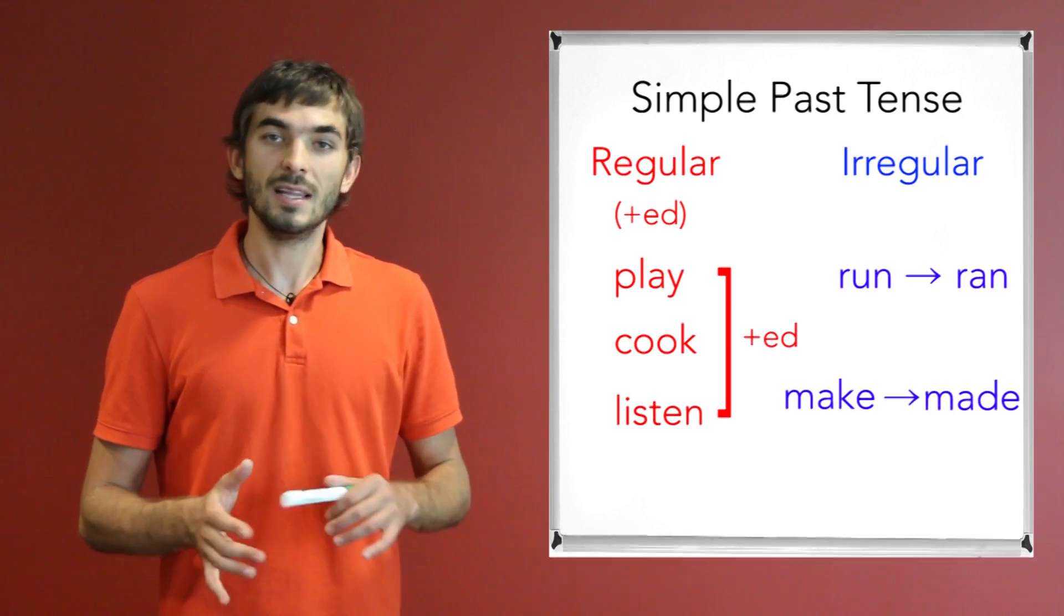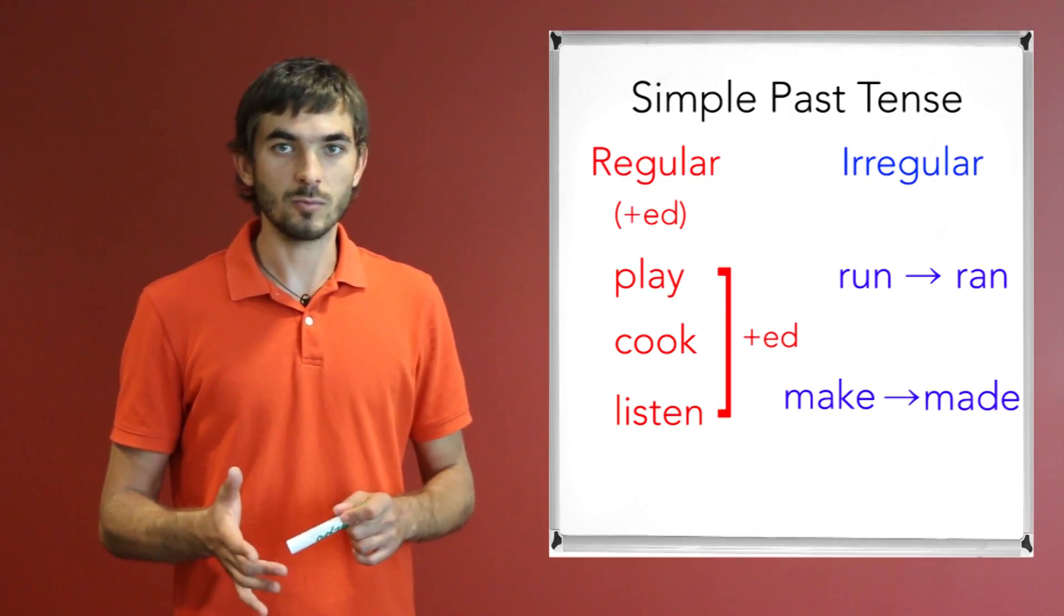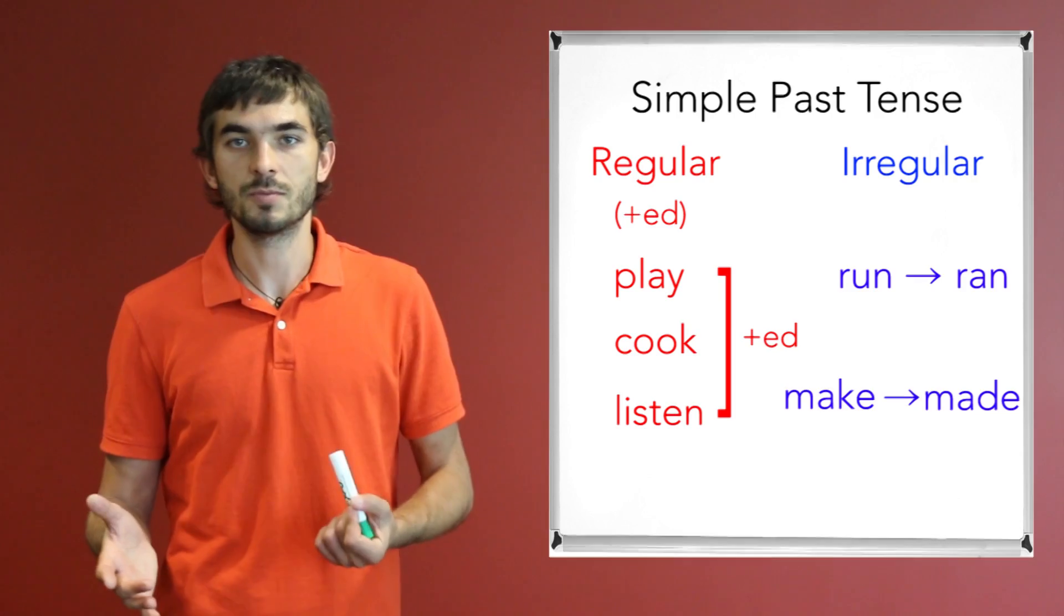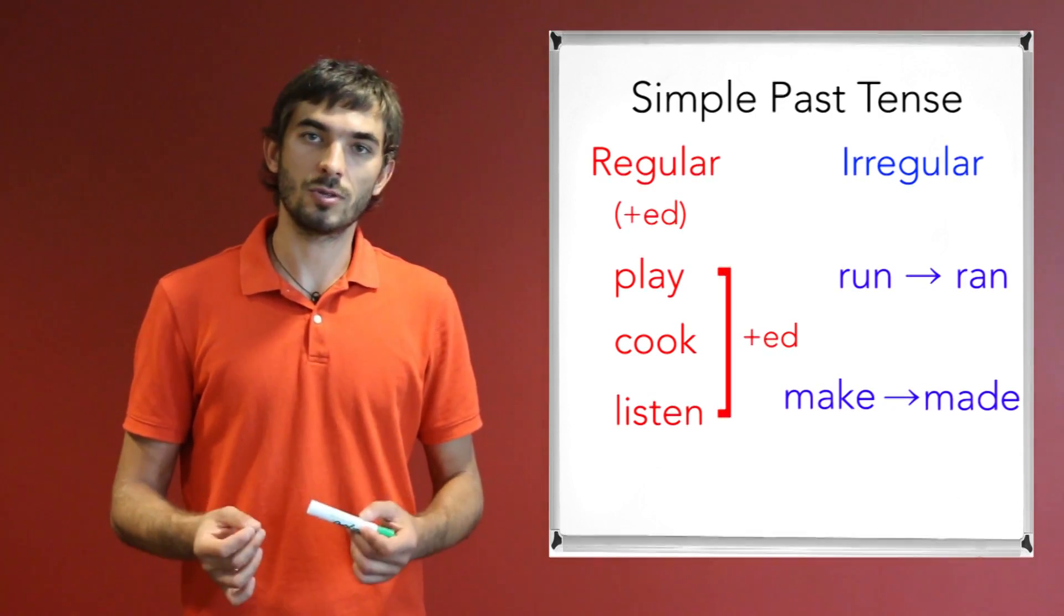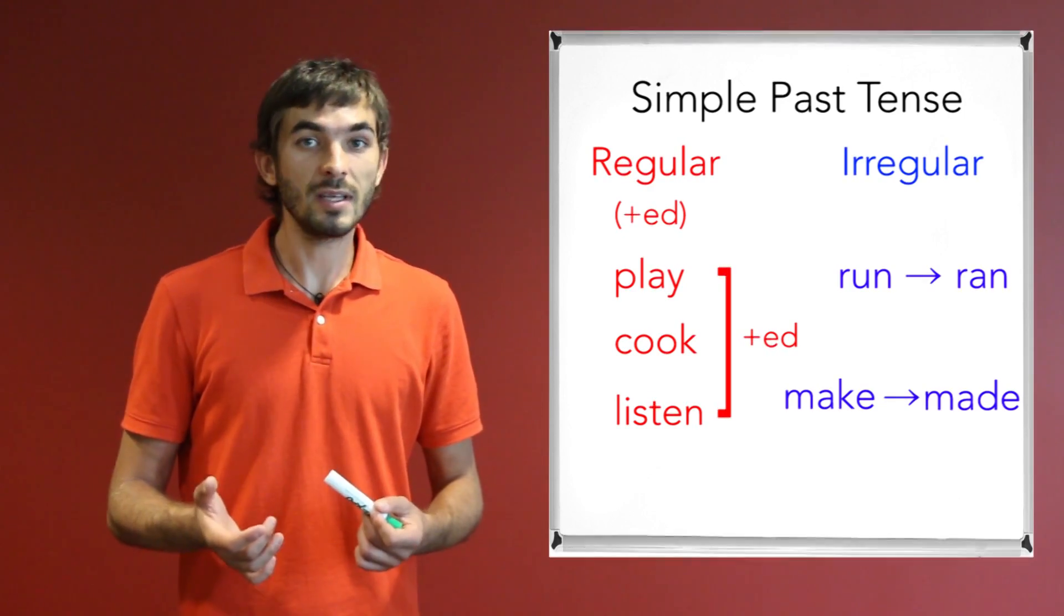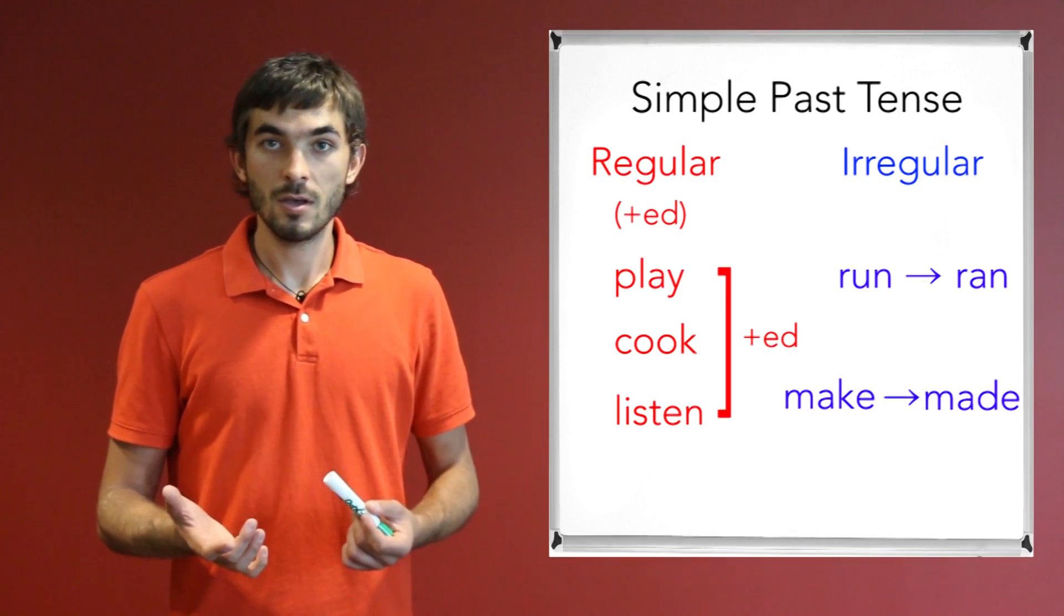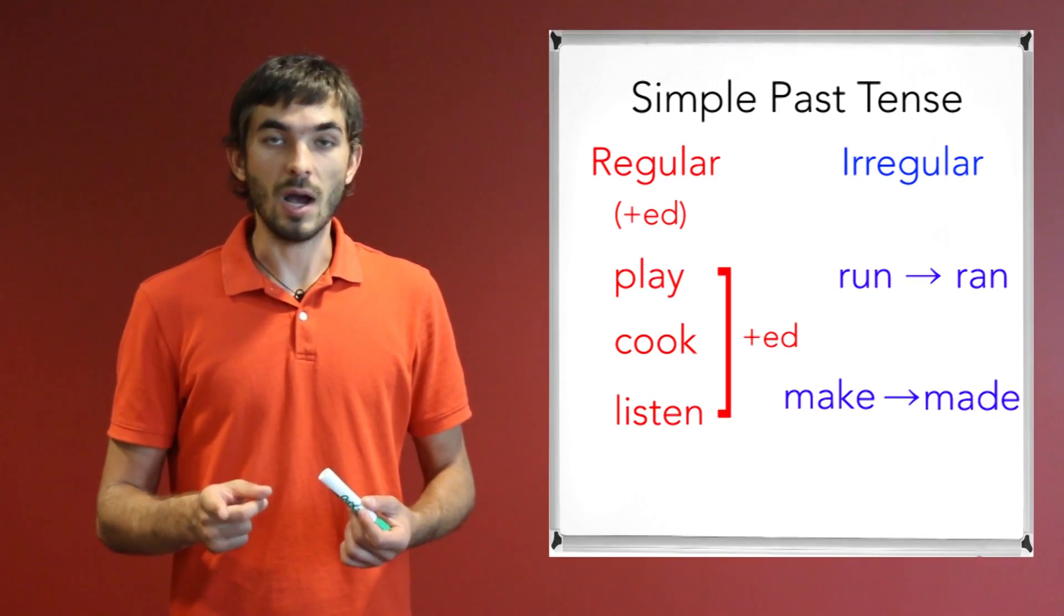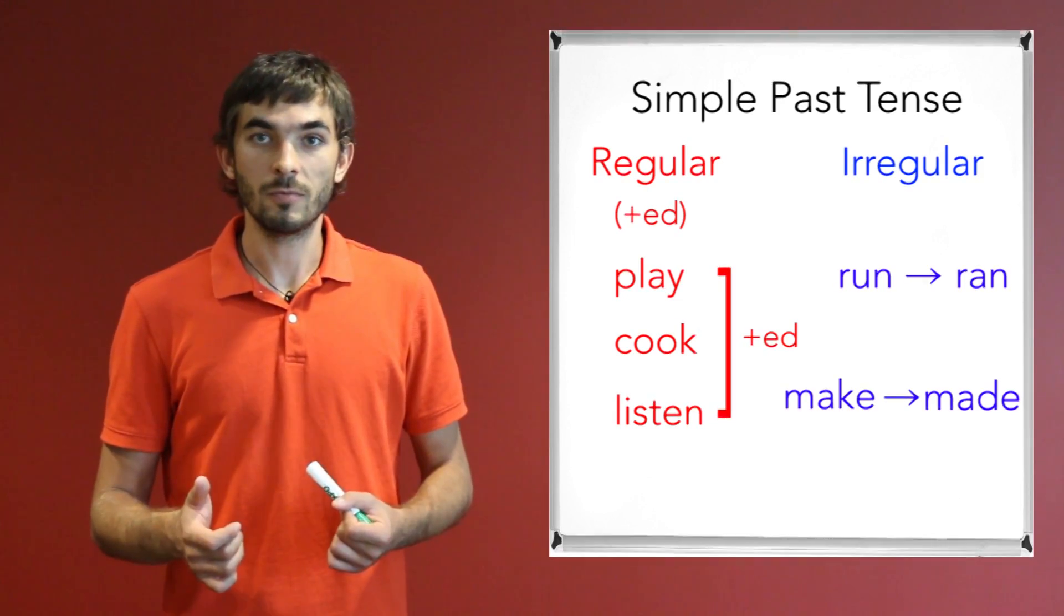So right now, let me see how well you already know simple past tense with regular verbs and irregular verbs. So, in order to do that, let's listen to a very short lecture. And you're supposed to fill in the blanks with the verbs that you hear, but be careful. Some of them are regular, and some of them are irregular. So, let's begin.